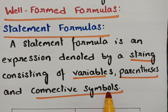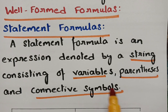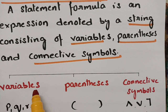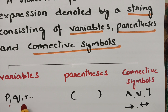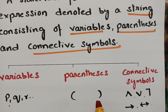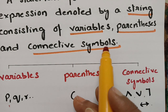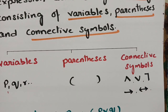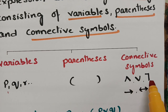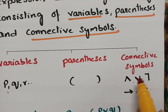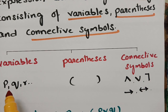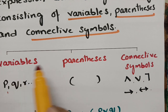So what are these variables? Variables are nothing but P, Q, R, and so on. Parenthesis are nothing but brackets. And connective symbols — as I mentioned in my earlier video — are conjunction, disjunction, negation, implication, and biconditional. So a statement formula should consist of a string in which variables, parenthesis, and connective symbols all exist.